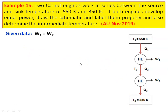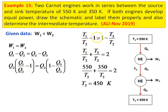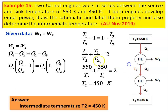Using the efficiency of the heat engine cycle: W1 equals W2, so Q1 minus Q2 equals Q2 minus Q3. Taking Q2 outside on the left side: Q2 into (Q1/Q2 minus 1); on the right side: Q2 into (1 minus Q3/Q2). Q2 cancels, giving Q1/Q2 equals T1/T2 and Q3/Q2 equals T3/T2. Rearranging: T1/T2 plus T3/T2 equals 2, so 550 divided by T2 plus 350 divided by T2 equals 2, giving T2 equals 450 Kelvin. The intermediate temperature T2 equals 450 Kelvin.